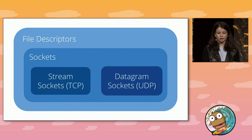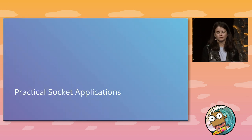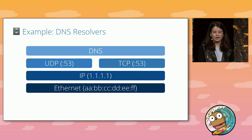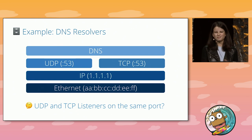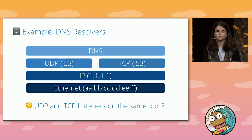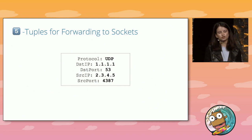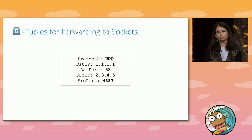We've now covered stream and datagram sockets through system calls and Go, so let's move on to more complex socket logic. An example of an application needing multiple sockets on the same address is a DNS resolver, because DNS can run over both TCP and UDP. Is it valid to run two sockets on the same address? This is where the concept of five tuples for socket matching comes in handy. The five tuple — consisting of protocol, destination IP and port, and source IP and port — is used to match traffic to the correct socket on a machine.